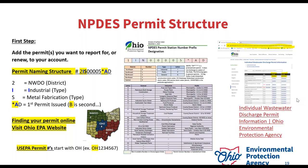If you ever need to locate your permit, you can view it on the stream service in your eBusiness Center. If it's not downloading properly, you can go to our website and navigate to the permitting section — you can find all active permits and search for your permit number there, then download it that way as well.